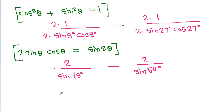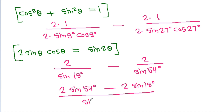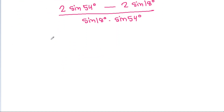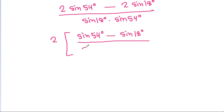Combining the fractions, this is 2 times (sin 54° minus sin 18°) by (sin 18° times sin 54°).